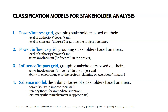With the power and interest grid, we're grouping stakeholders by their level of authority — how much power they have — and their level of concern or interest regarding the project outcomes. If they have a lot of authority and are really concerned about the outcomes, that's somebody we want to focus on. The power and influence grid also groups them by authority, but by their active involvement. The distinction is that the power and interest grid tracks how interested they are in the outcomes, while the power and influence grid tracks how actively involved they are.